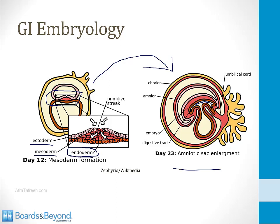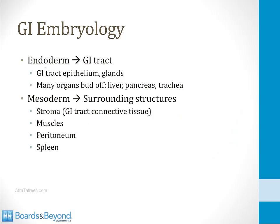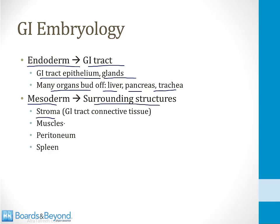Just outside the endoderm is mesoderm, which gives rise to connective tissue and muscles surrounding GI structures. To summarize: the endoderm develops into the GI tract epithelium and glands, and organs like the liver, pancreas, and trachea bud off from it. The mesoderm forms surrounding structures — stroma, connective tissues, muscles, and peritoneum. The spleen is unique in that it comes from mesoderm, unlike most abdominal organs which come from endoderm.